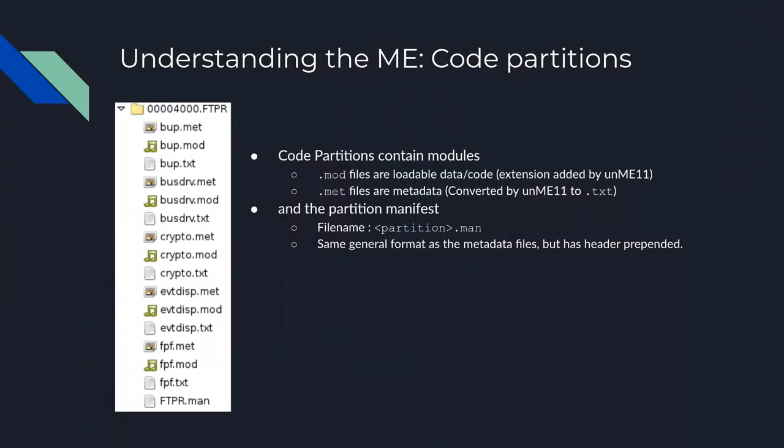The code partitions contain a whole lot of files: the binaries themselves with no extension, and metadata files. The binary format they use has no headers, nothing included — all that data is in the metadata file. When you use the unme11 tool, it'll convert those to text files for you, so you can get started without really understanding how they work.